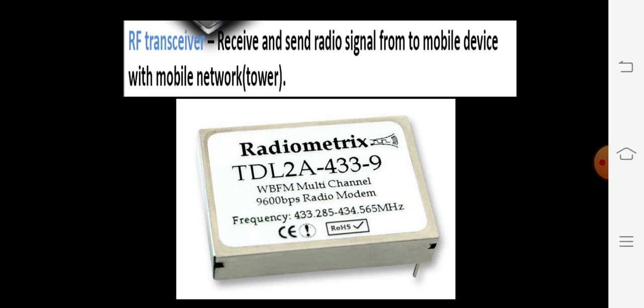RF Transceiver is connected with your SIM, that is Subscriber Identification Module. What is the use of RF Transceiver? RF is Radio Frequency. Transceiver means it is a combined device that can both transmit as well as receive. RF Transceiver is used for receiving and sending radio signals from or to the mobile device with a mobile network, that is a tower. Our SIM is connected with any mobile tower.